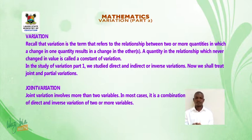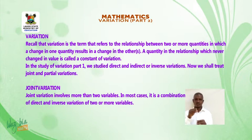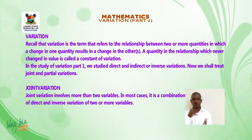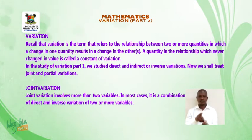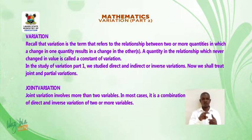Joint variation. Joint variation involves more than two variables. In most cases, it is a combination of direct and inverse variation of two or more variables.